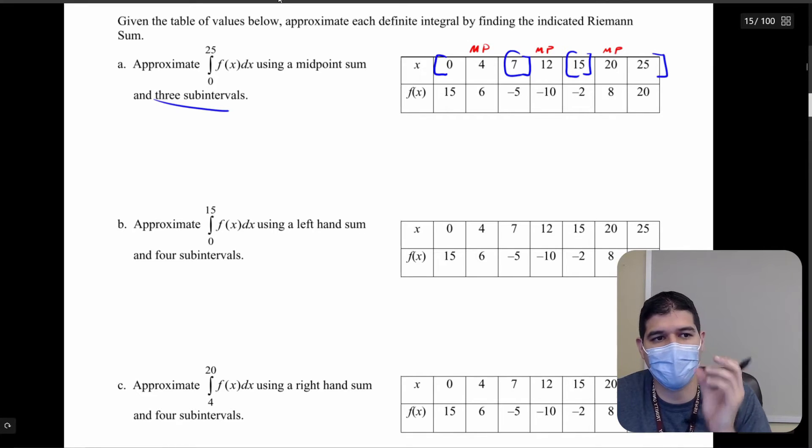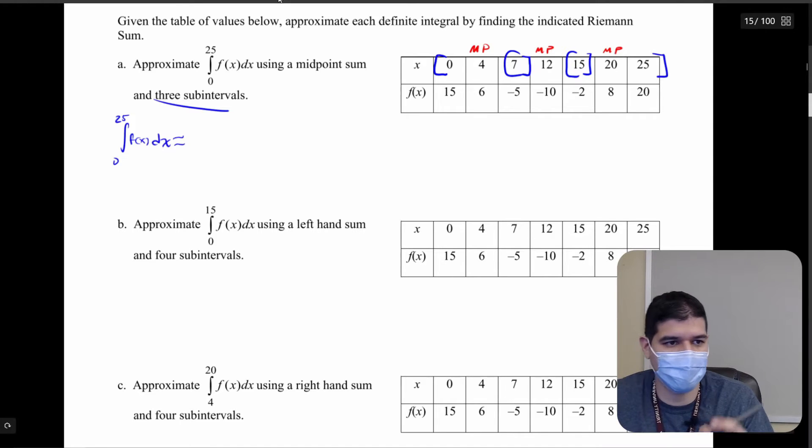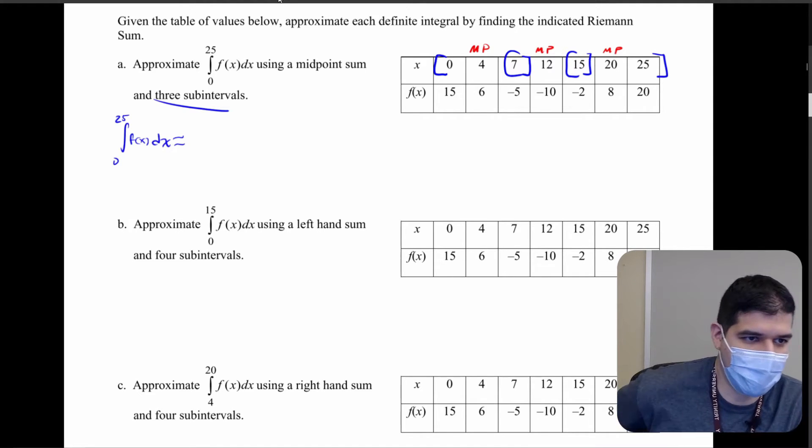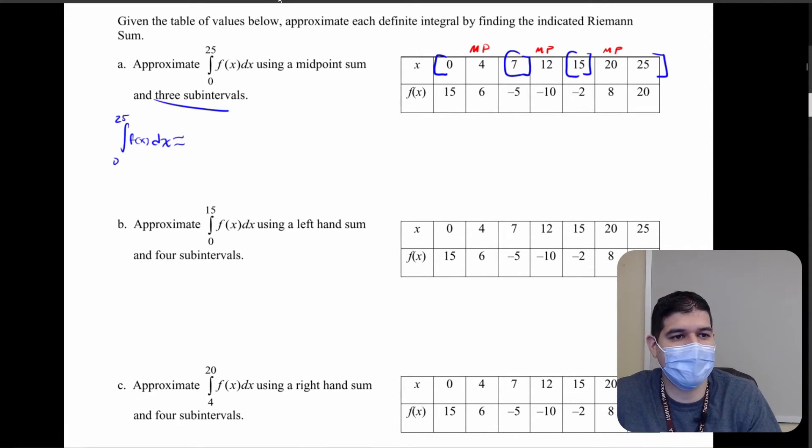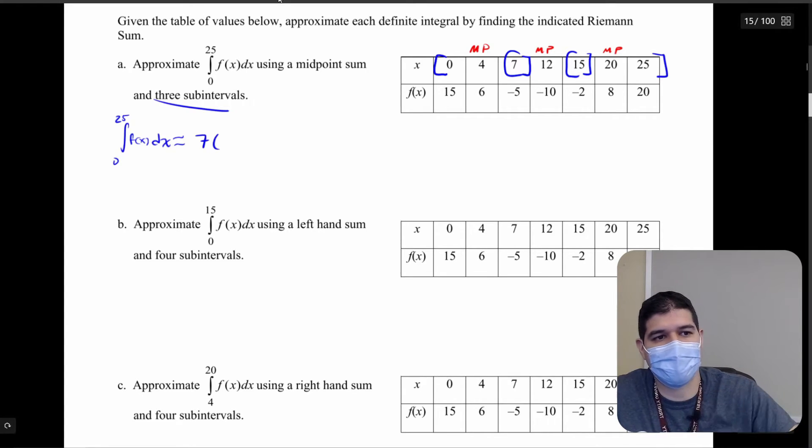Remember we're going to find the base and the height for all of these. So the integral from 0 to 25 of f of x dx is approximately the base of my first one, because it's base times height for all of these rectangles. So the base of my first one is 7 because it's going from 0 to 7 times the height. The height is going to be at the midpoint which is f of 4 which is 6.